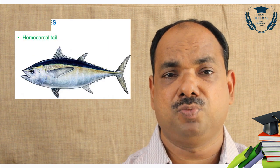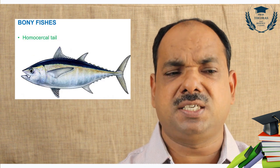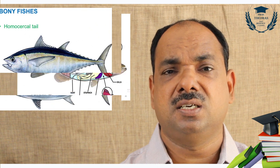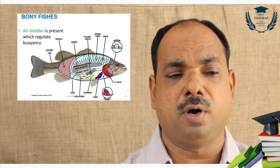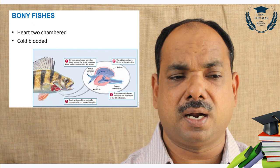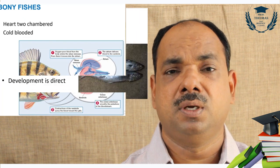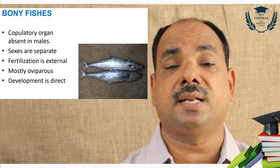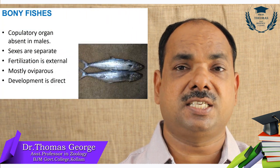Lungfishes are Lepidosiren, Epiceratodus, and Neoceratodus. Fishes show estivation and hibernation. Gills are used for branchial respiration; in addition, accessory respiratory organs are present. They have a swim bladder. Bony fishes have a spiral valve or scroll valve. Homocercal tail is present. Air bladder or swim bladder is present in bony fishes. Heart is two-chambered. They are cold-blooded organisms. In bony fishes, copulatory organs are absent.